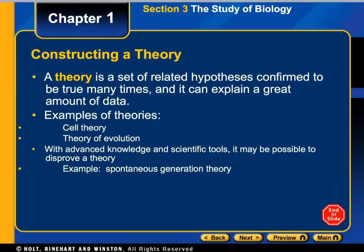After scientists do their experiment many, many times, a theory can be made. A theory is a set of related hypotheses confirmed to be true many, many times. Theories you might have heard of include the cell theory and the theory of evolution.